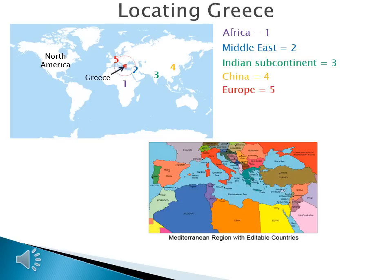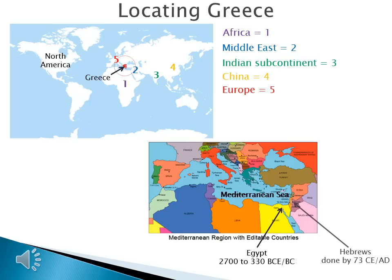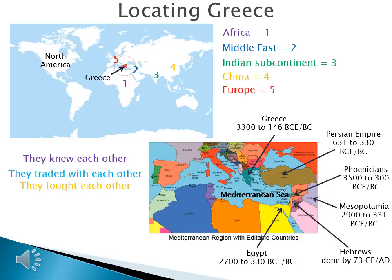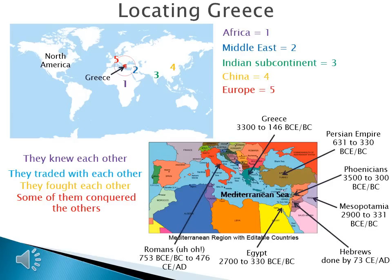You will see one major landmark we relied on when studying ancient civilizations: the Mediterranean Sea. There are other places we've learned surrounding the Mediterranean Sea — Egypt, from around 2700 to 330 BCE; the Hebrews, done by 73 CE; Mesopotamia, 2900 to 331 BCE; the Phoenicians, 3500 to 300 BCE; and the Persian Empire, 631 to 330 BCE. Now we're going to add the Greeks, around from 3300 to 146 BCE. That means they knew each other — they traded, they fought, and some conquered the others. And next unit, we're going to learn about the Romans, who are around from 753 BCE to 476 CE, and will eventually take over everything you see on this map.